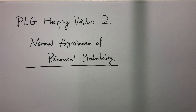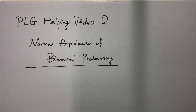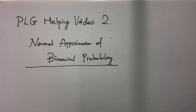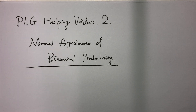What's up guys? Welcome back to the PLG helping video number two. In this video we're going to be covering the knowledge of normal approximation of binomial probability. We are going to consider three things: firstly a quick revision of binomial distribution, secondly why we need this kind of normal approximation and how it works, and lastly we will take a sample question from past exam papers and illustrate how to apply this knowledge to a real-life problem.